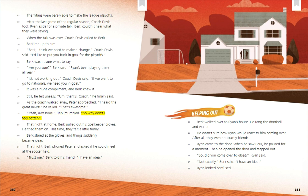That night at home, Burke pulled out his goalkeeper gloves and tried them on. They felt a little funny. Burke stared at the gloves, and things suddenly became clear. That night, Burke phoned Peter and asked if he could meet at the soccer field. 'Trust me,' Burke told his friend. 'I have an idea.'